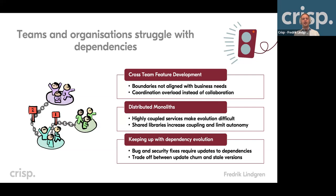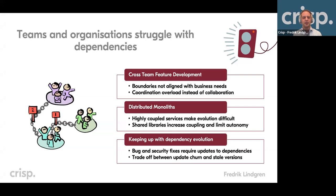The third dependency challenge is just keeping up with the general technical evolution — new versions. Sometimes, like we had before Christmas, there's a high-priority security fix that had to be rolled out across maybe half or a third of all Java backend deployments worldwide with Log4J. One of the challenges with keeping up with versions is the tradeoff between continuously updating everything or doing it too rarely and sitting with old stale versions and compatibility problems.